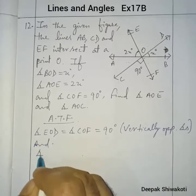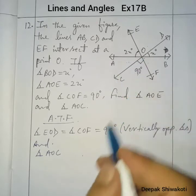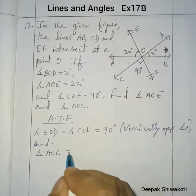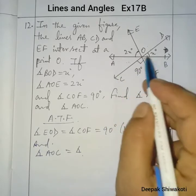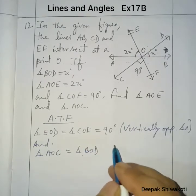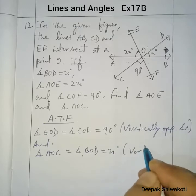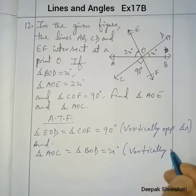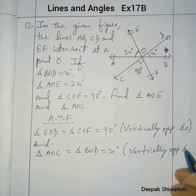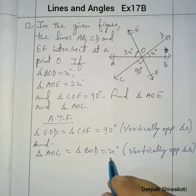And angle AOC is equal to angle BOD. Why? Because these are also vertically opposite angles. These two are vertically opposite angles, and the value is equal to x degrees.